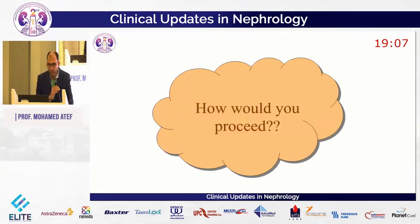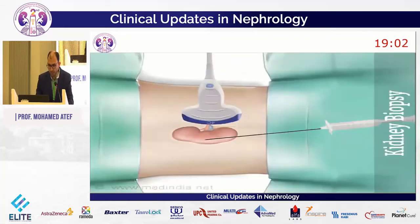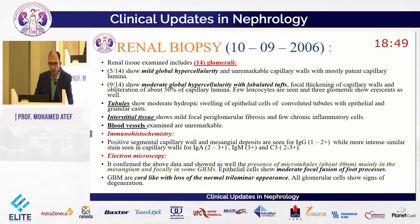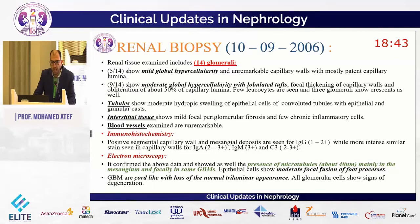A decision for renal biopsy was taken. The biopsy was performed on 10 September 2006 and included 14 glomeruli. Five out of 14 showed mild global hypercellularity with unremarkable capillary walls and mostly patent capillary lumina. Nine out of 14 showed moderate global hypercellularity with lobulated tufts, focal thickening of capillary walls, and obliteration of about 15% of capillary lumina. Few leukocytes were seen, and 3 glomeruli showed crescents as well.